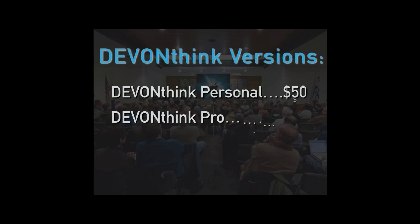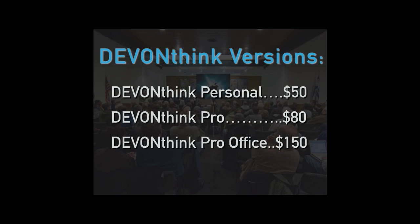I will say that DevonThink comes in three versions: a pro, a personal, and a pro office. Each one has increased capabilities. The pro office version actually has OCR and web server functions. You can find these things on sale a lot — there are companies that do bundles, and you'll often find DevonThink included in one of those bundles. The whole bundle may be $25, and that's actually how I acquired it.